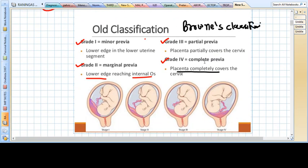This was the very old classification of placenta previa called Brownie's classification. Grade one means minor placenta previa, where the lower edge of the placenta is in the lower uterine segment. Grade two is marginal placenta previa, where the lower edge reaches the internal os. Grade three is partial previa, where placenta partially covers the cervix. Grade four means complete placenta previa, where placenta completely covers the cervix.